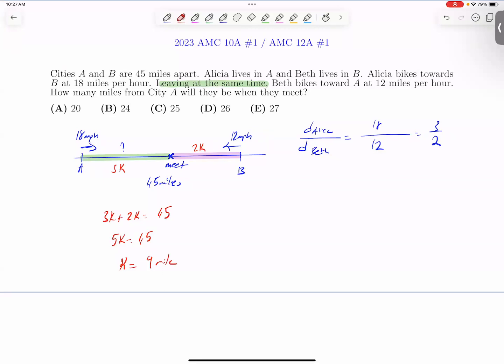Then the distance from A to midpoint, 3k equals 3 times 9, which is 27 miles. Option E is the answer. Thank you.